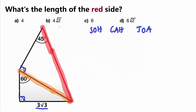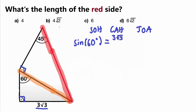Looking at SOH-CAH-TOA, the S stands for sine, O for opposite, and H for hypotenuse — so we'll use sine. We write: sine of 60 degrees equals opposite over hypotenuse, which gives us sine(60°) = 3√3 / y, where y is our unknown hypotenuse.